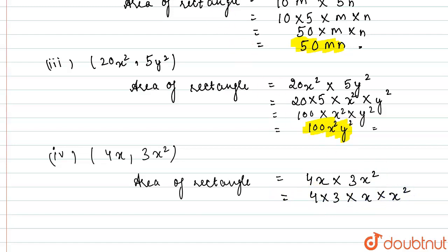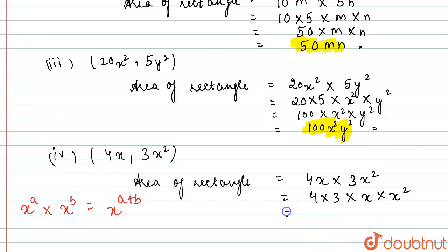Remember the property of exponents: when the bases are the same and powers are different and in multiplication, that is x^a into x^b, the powers get added to give x^(a+b). Using this, 4 into 3 is 12, multiplied by x^(1+2), so the answer is 12x³.